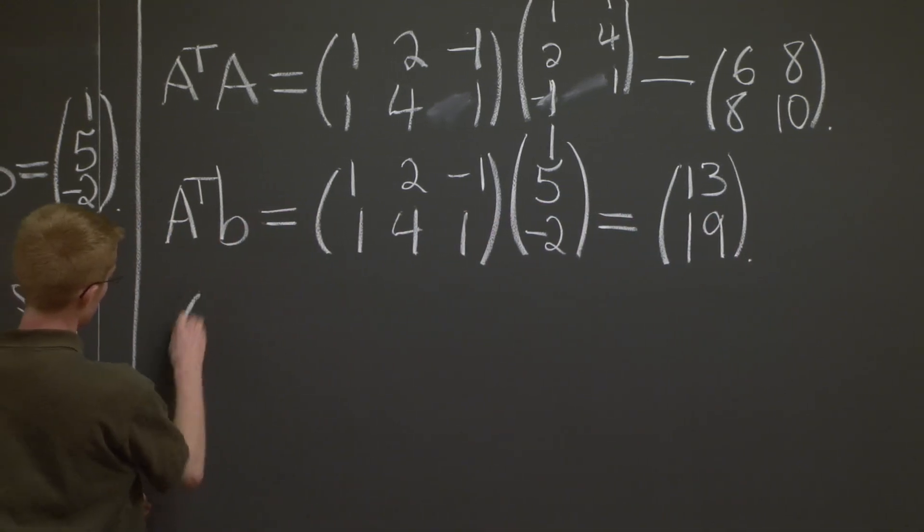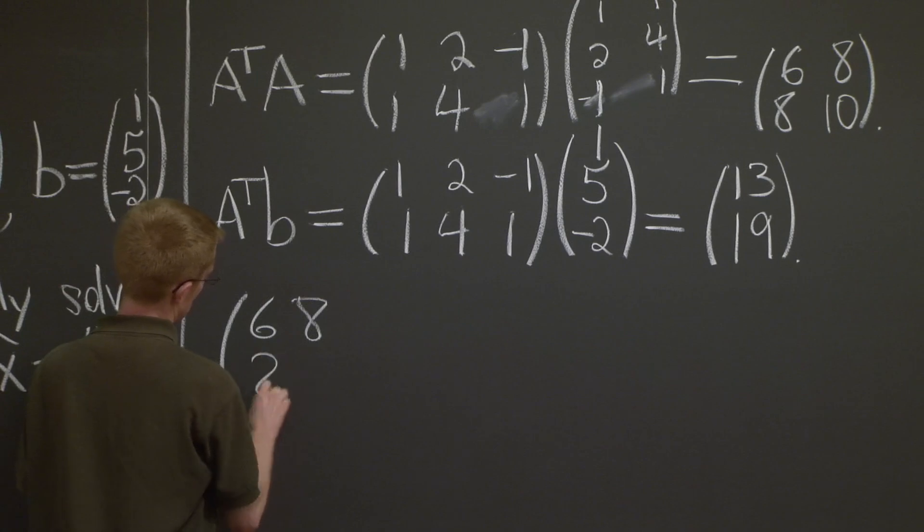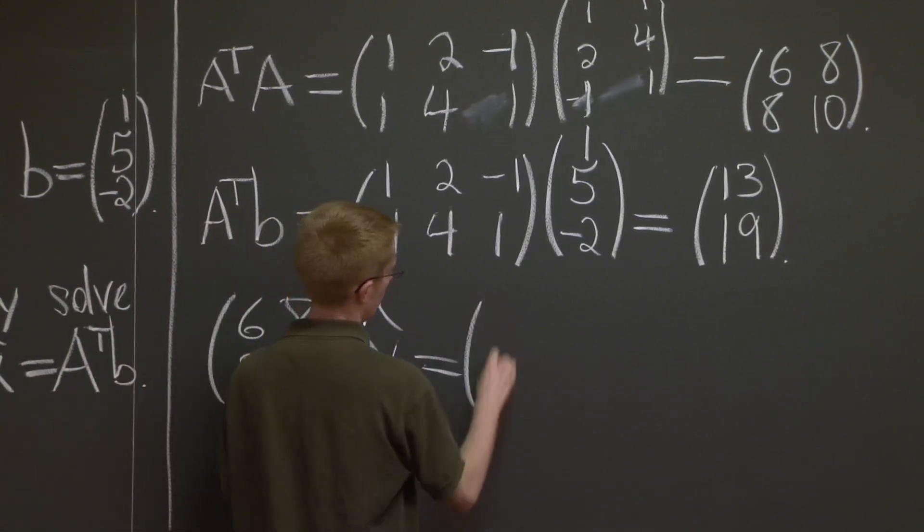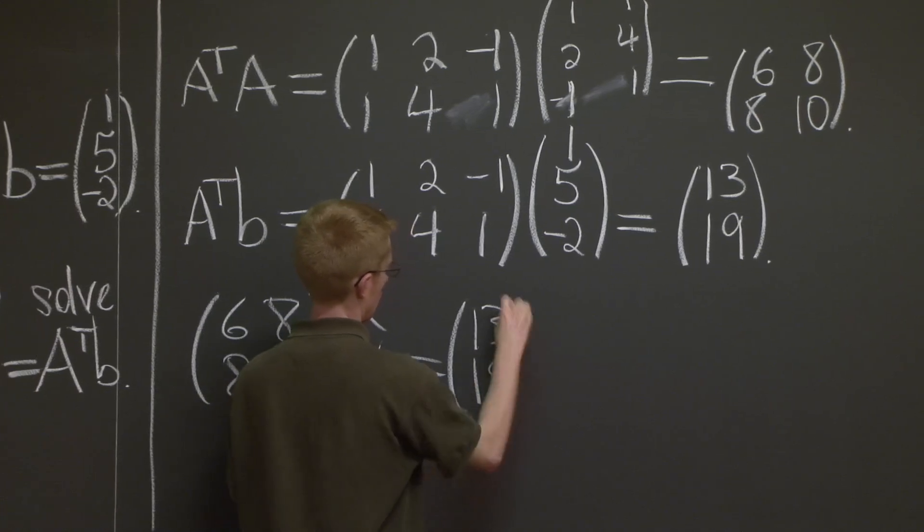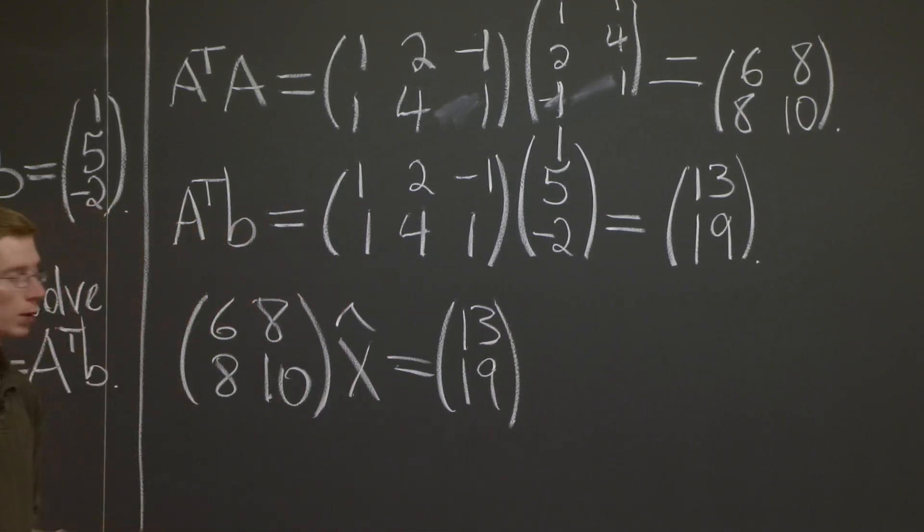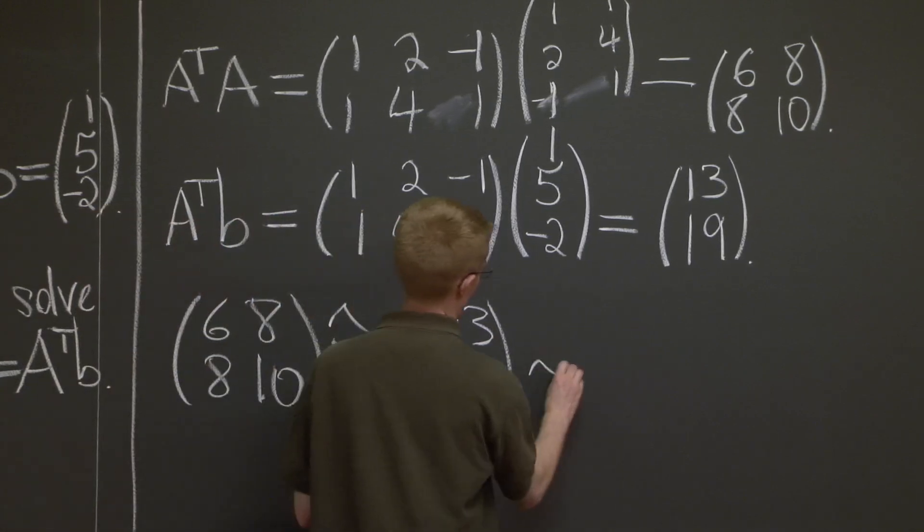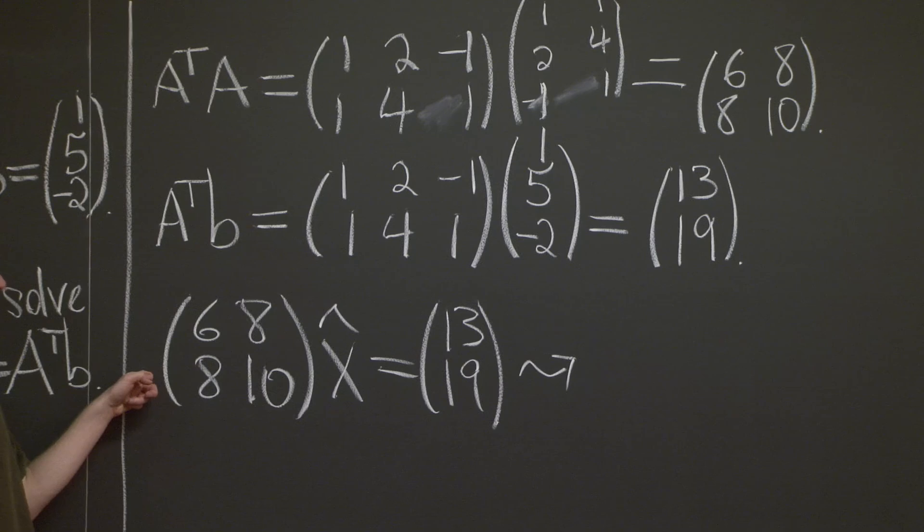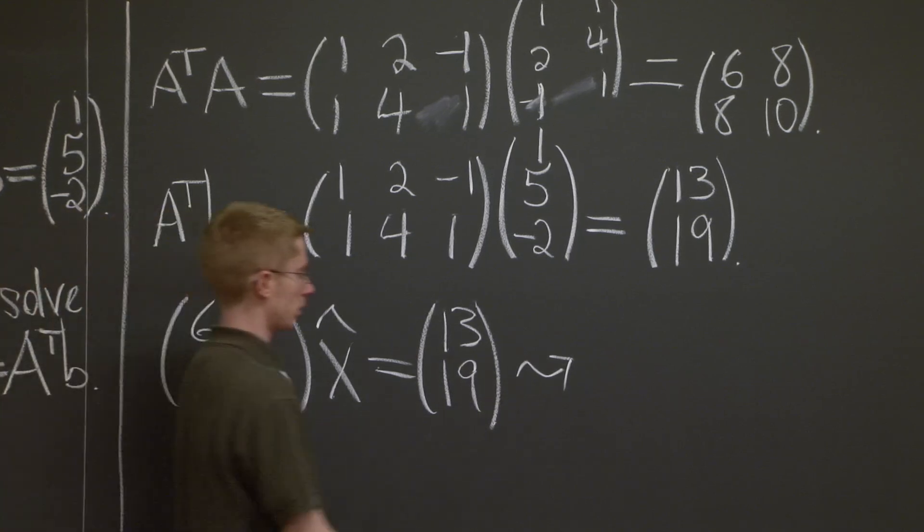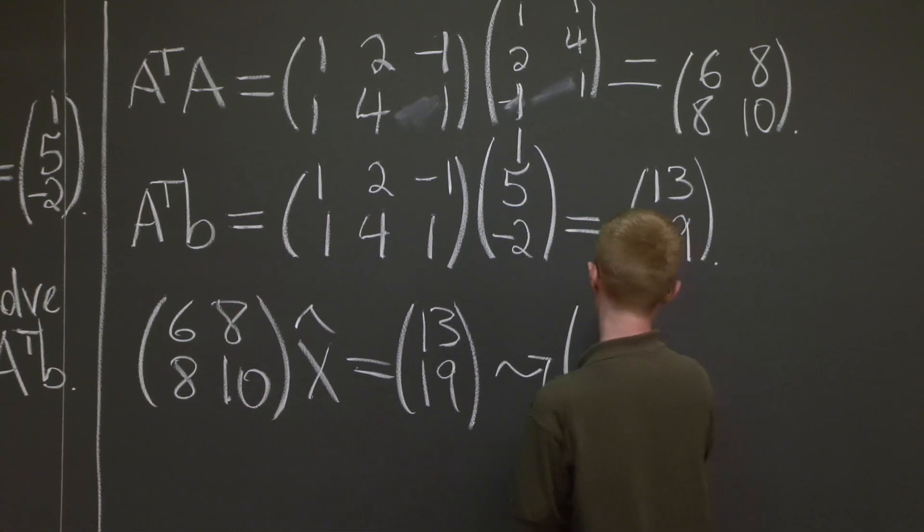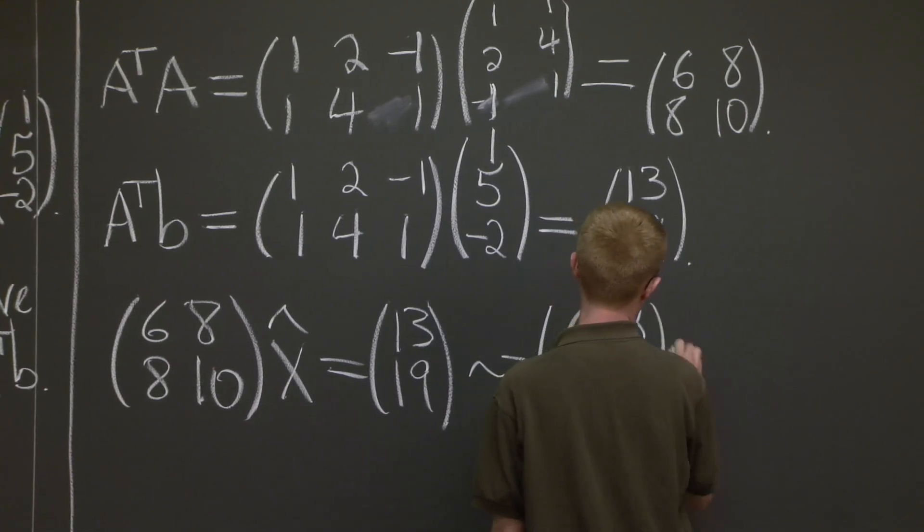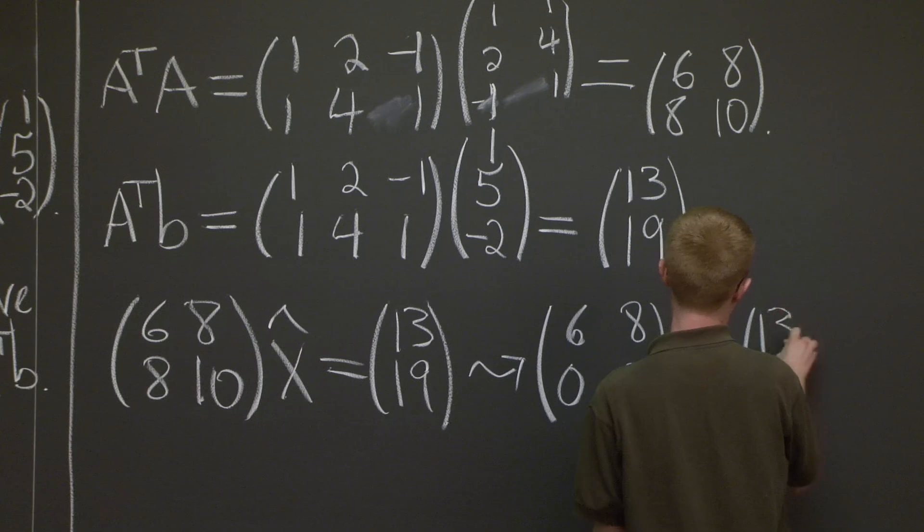And so what we're solving here is (6, 8; 8, 10) times x̂ equals (13, 19). And we remember how to do this just by using elimination. We replace the second row by 3 times the second row minus 4 times the first row. Again, I'm going to do this quickly because you know this from other parts of the class.